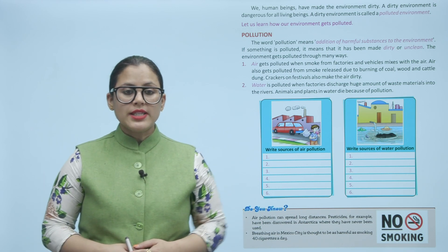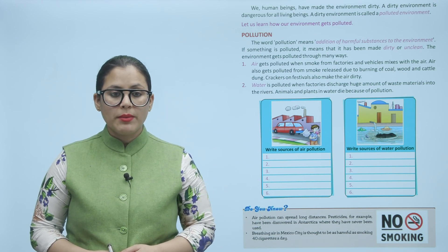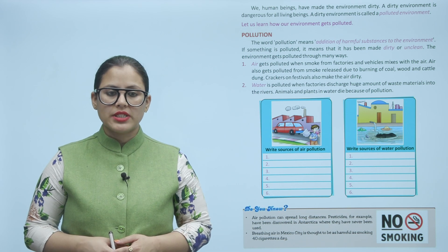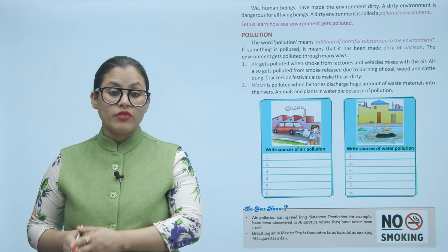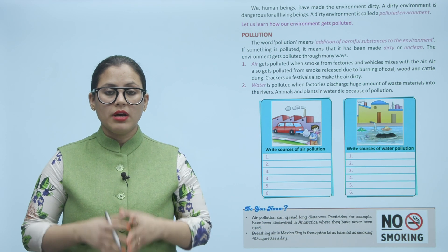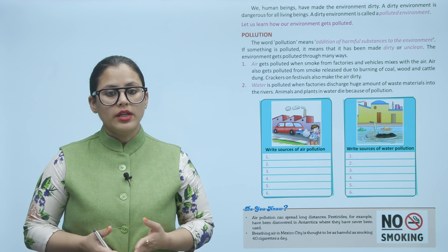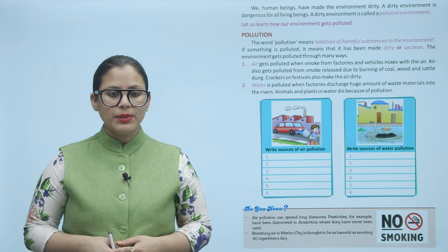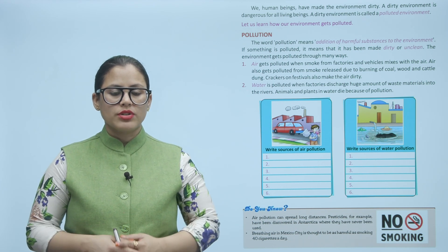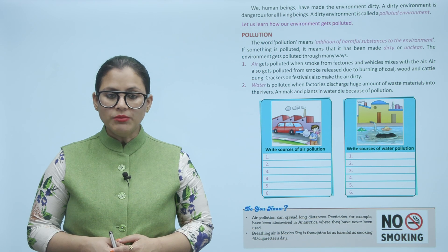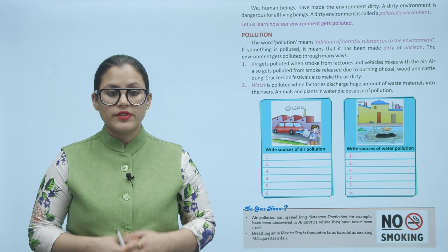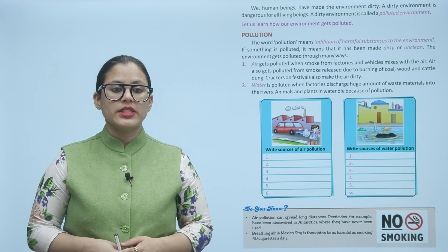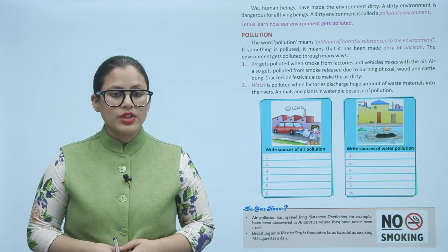We human beings have made the environment dirty. A dirty environment is dangerous for all living beings. A dirty environment is called a polluted environment. Let us learn how our environment gets polluted. The word pollution means addition of harmful substances to the environment. If something is polluted, it means that it has been made dirty or unclean. The environment gets polluted through many ways.